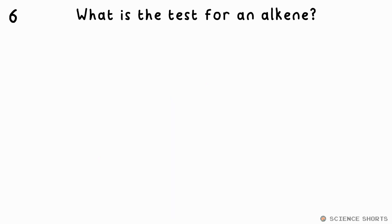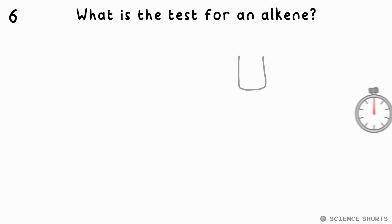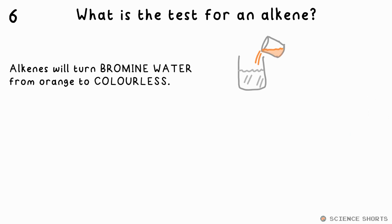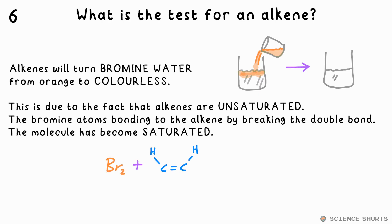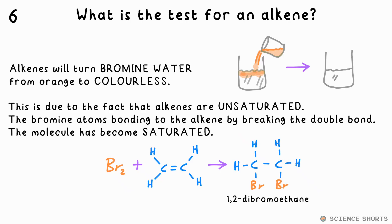Question 6. What's the test for alkenes? Alkenes will turn bromine water from orange to colourless — remember, we don't say clear. This is because the bromine atoms bond to the alkene to make a bromoalkane, which is colourless.